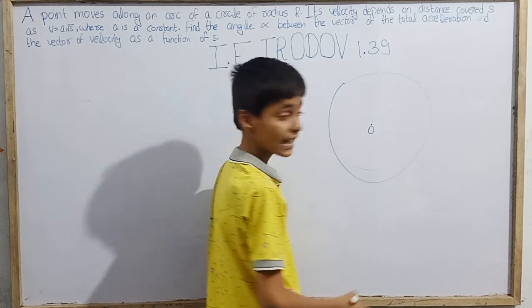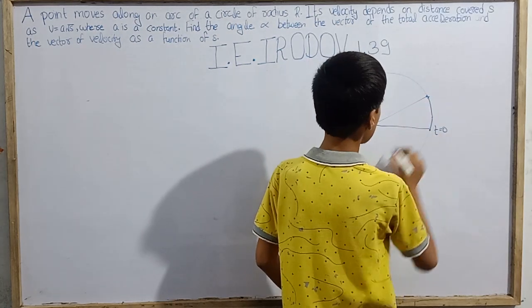So this is our problem. We basically assume a circle, and at t equals 0, a particle is situated at this point. After a while, this particle covers some distance and finally reaches here. The velocity as a function of distance is given, and the velocity vector is always tangent to the path.